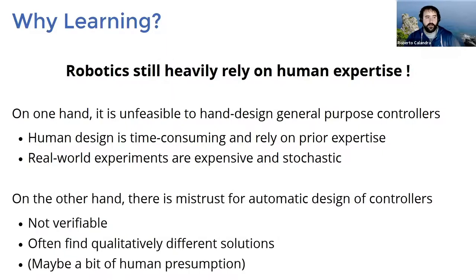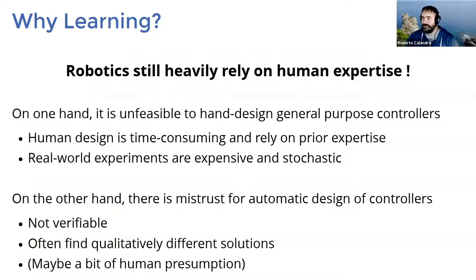The problem is that robotics still heavily relies on human expertise. Most controllers are hand-designed by a plethora of engineers spending months to tune individual controllers for individual tasks. This is not scalable because it's extremely time consuming and requires very large teams. And even then, testing controllers on real robots is expensive and the results are often stochastic — there's no guarantee you'll get the same outcome twice. There's also a human presumption issue among experienced engineers who resist learning-based approaches.